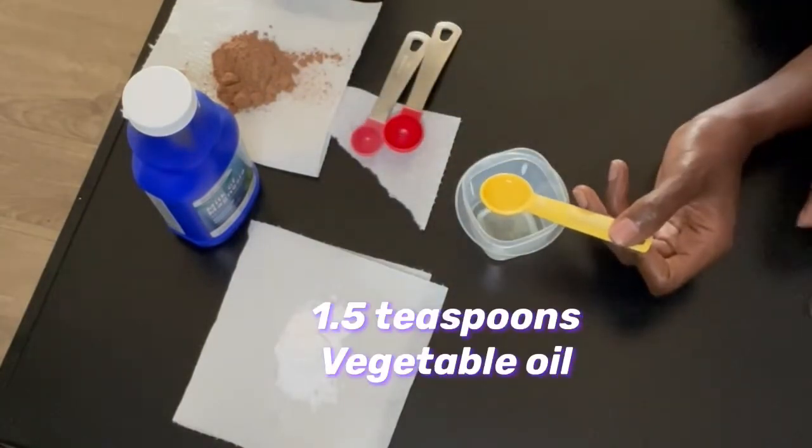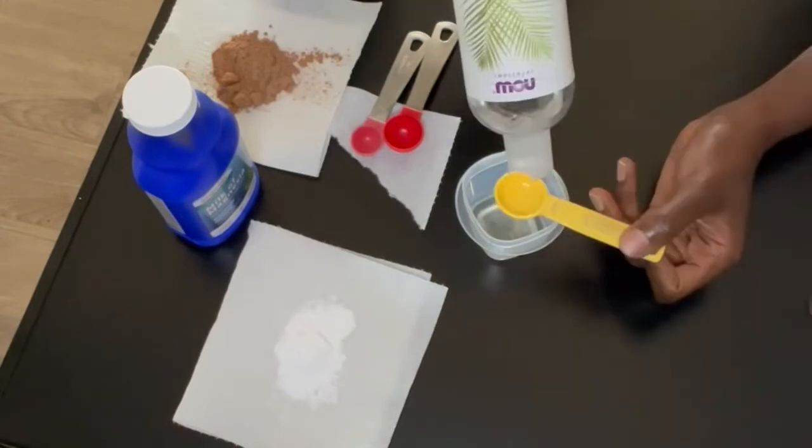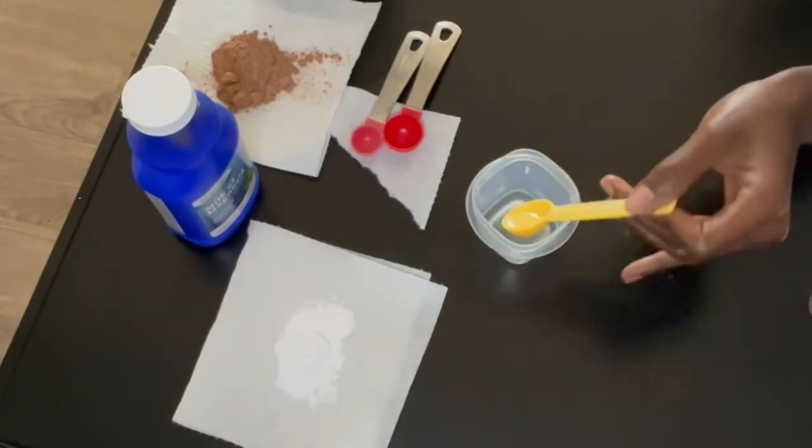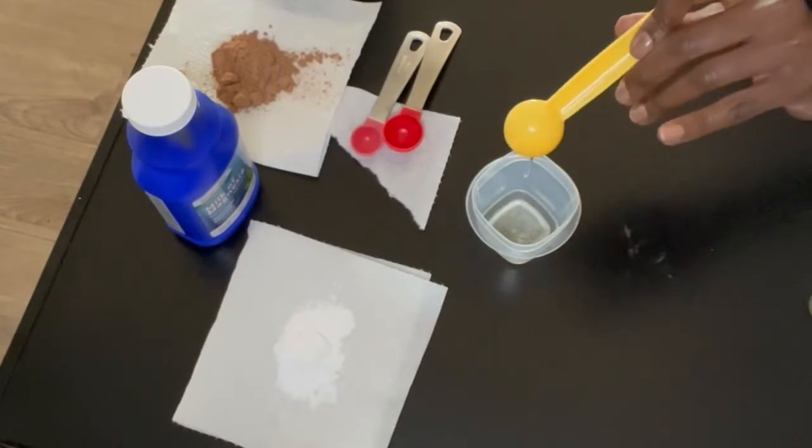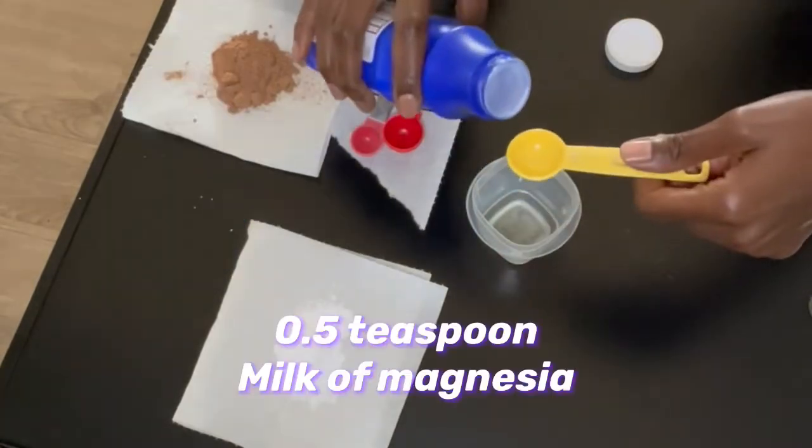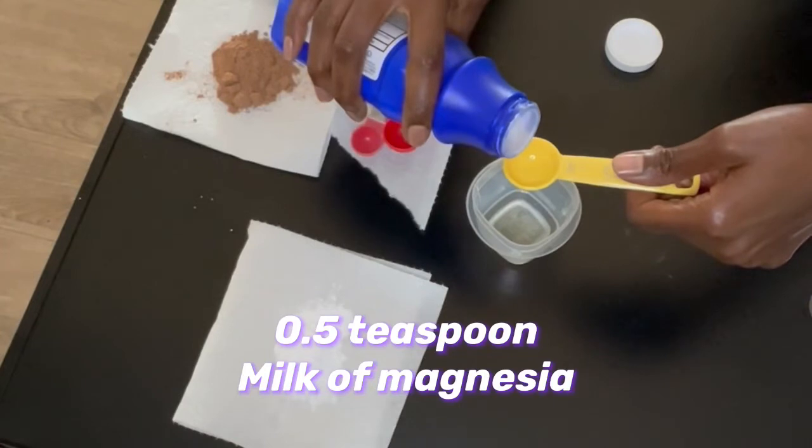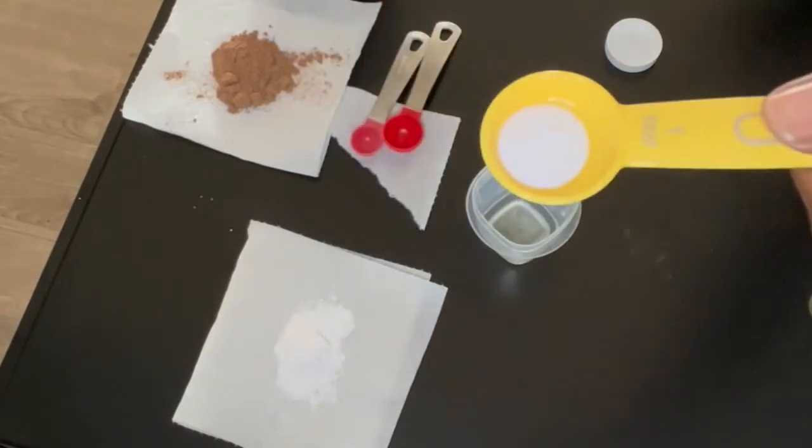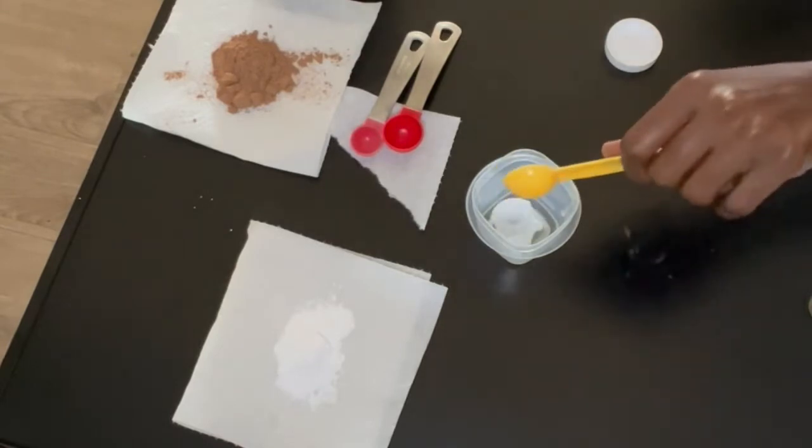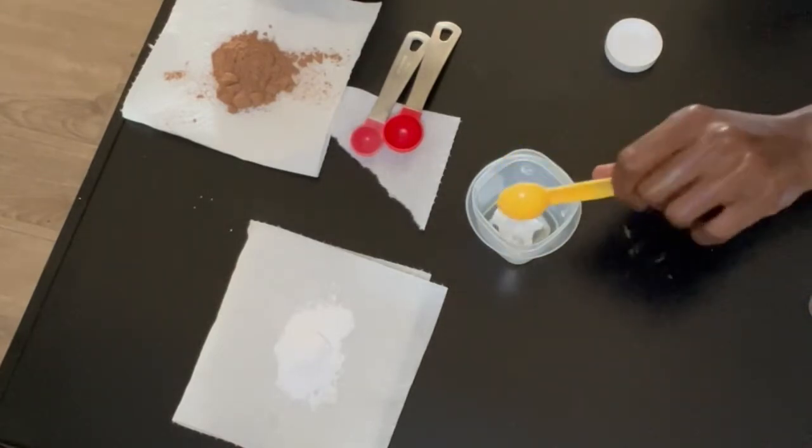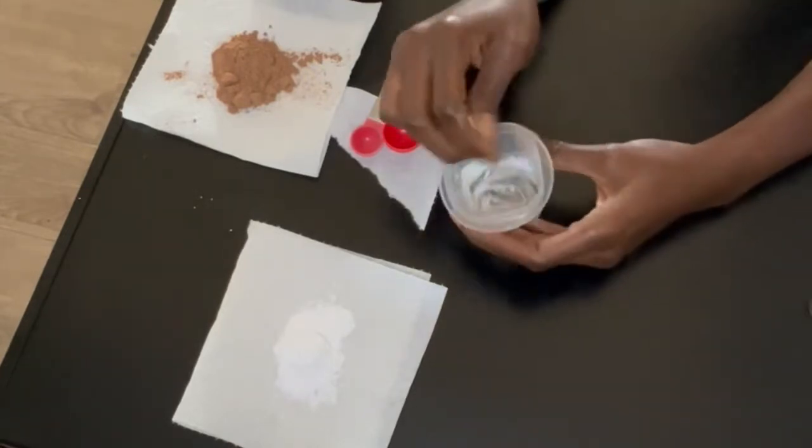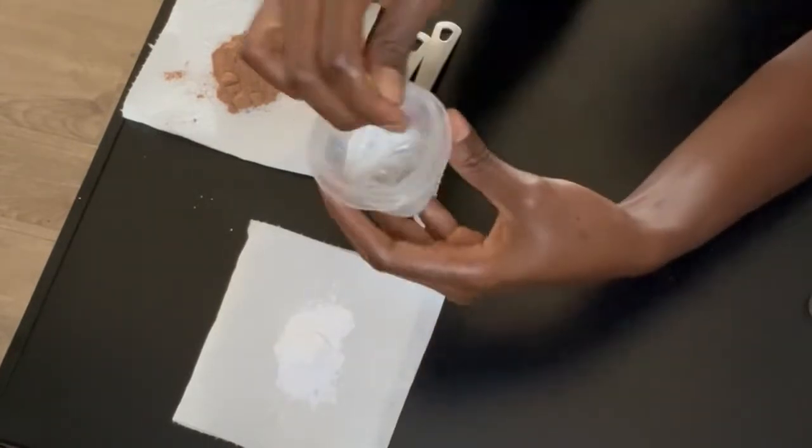One and a half teaspoons of vegetable oil, half a teaspoon of milk of magnesia. Now I'm going to get my popsicle stick and mix this really well, making sure everything is nicely incorporated.